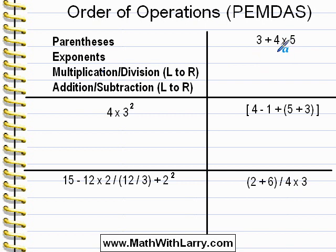In this example here, we have 3 plus 4 times 5. Now it's very tempting to just start with the addition since it's on the left, but we don't do that. According to the order of operations, we must do our multiplication first.